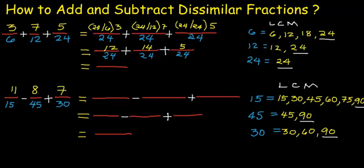We can add directly: 12 plus 14 plus 5 gives us 31. Our denominator is 24. Therefore, our final answer for this problem is 31 over 24.